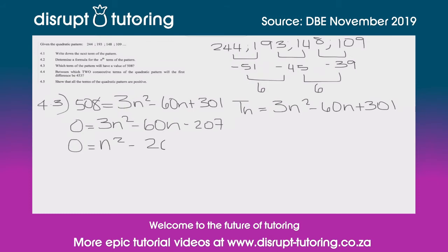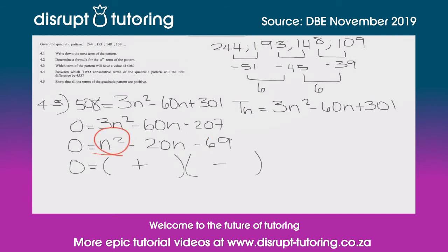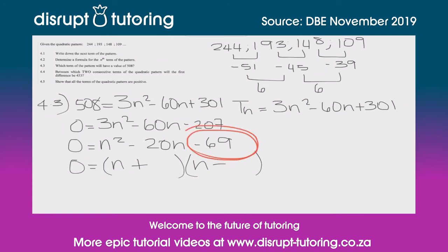Dividing through by 3 gives us n squared minus 20n minus 69. Now I can factorize this mentally. We need two signs that are different, so it's (n __ )(n __ ). We need two numbers that multiply to 69 and subtract to 20. After a bit of trial and error, those numbers are 23 and 3: 23 times 3 equals 69, and 23 minus 3 equals 20. The bigger number goes with the minus sign, giving us (n minus 23)(n plus 3).